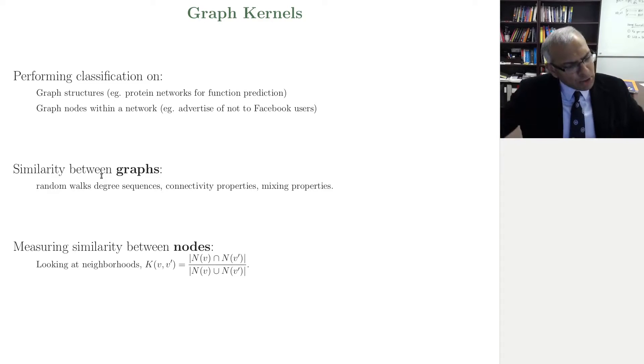And there are many ways of constructing similarity metrics between graphs, based on random walks, degree sequences, connectivity properties, mixing properties, and so on and so forth. Sometimes you can just look at, so I'm a node and I have a set of nodes who are in my neighborhood, and you're a node and you have a set of nodes. So we can just take those two sets of nodes and ask, what's the set similarity?